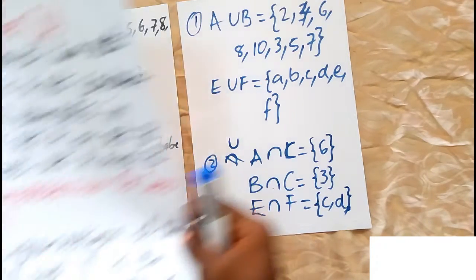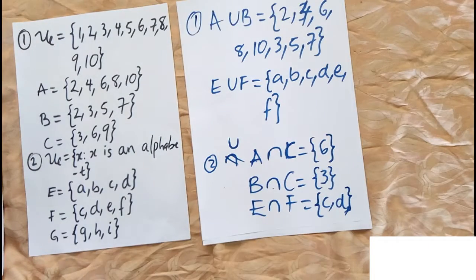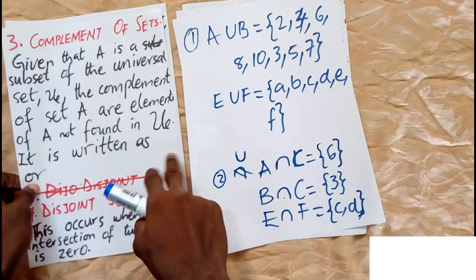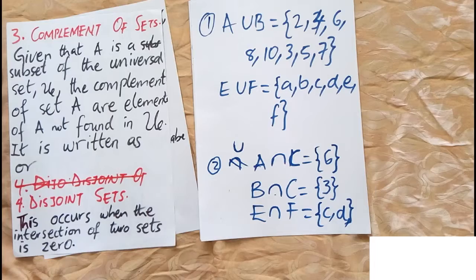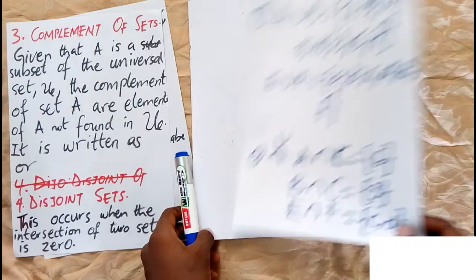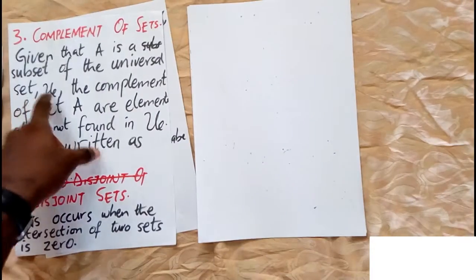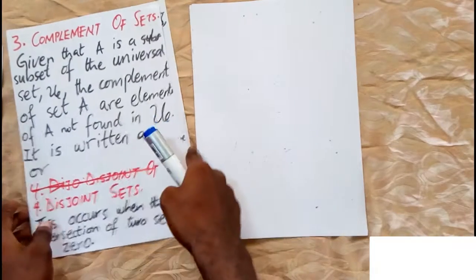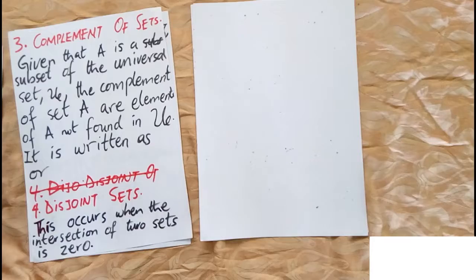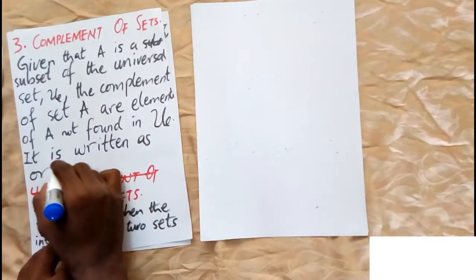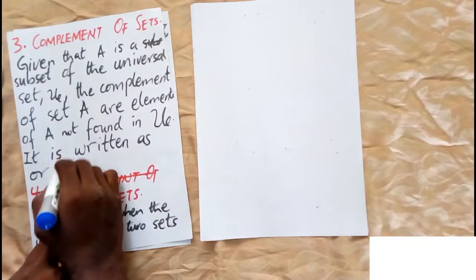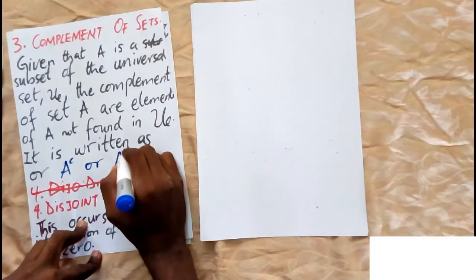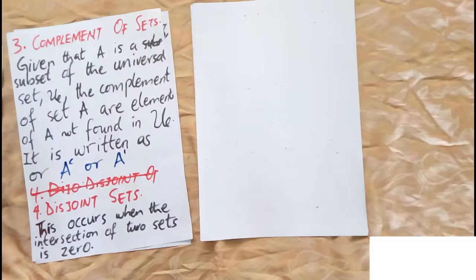The next topic is complement of sets. Given that A is a subset of the universal set, the complement of set A are the elements in the universal set not found in A. It is written as A' (A prime) or A superscript C.